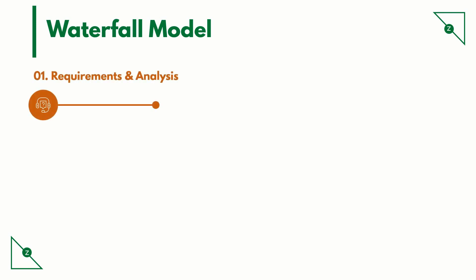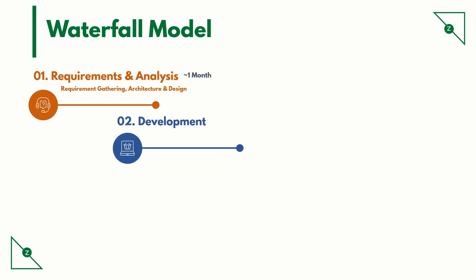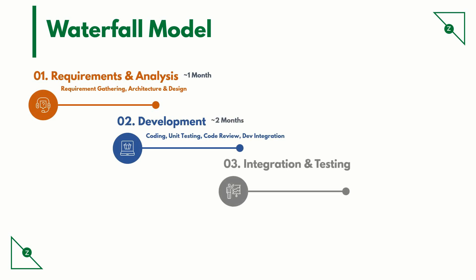We start with the requirements and analysis phase, where we cover requirement gathering, architecture and design — roughly takes one month. Then we move on to the development phase, covering coding, unit testing, code review and dev integration, which should roughly take two months. Then we move on to integration and testing, where we do validation activities like QA integration, UAT and regression, which should take about one month.